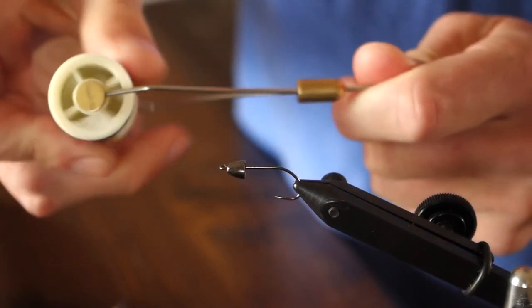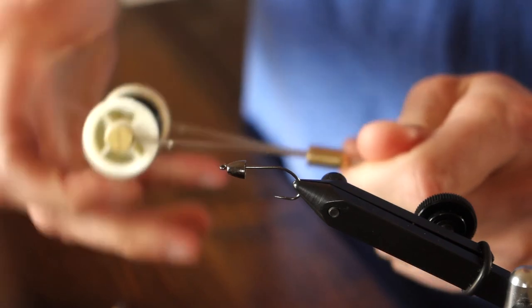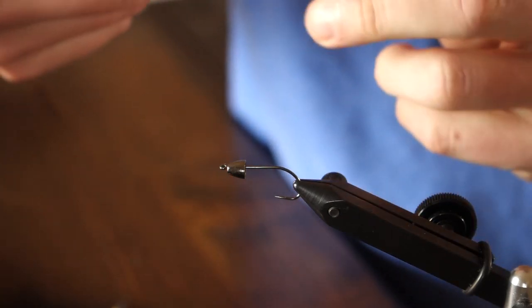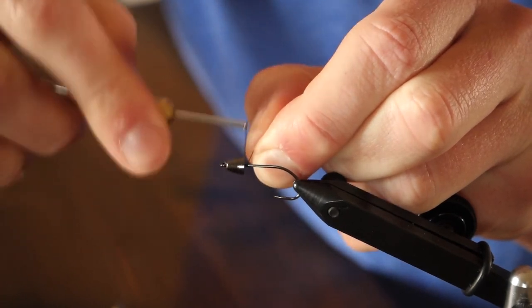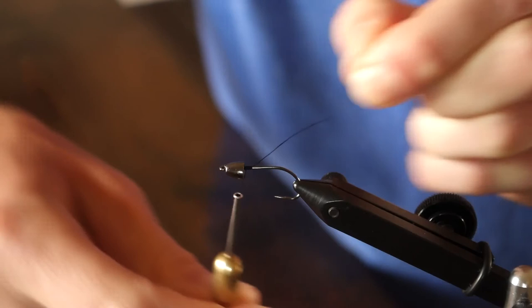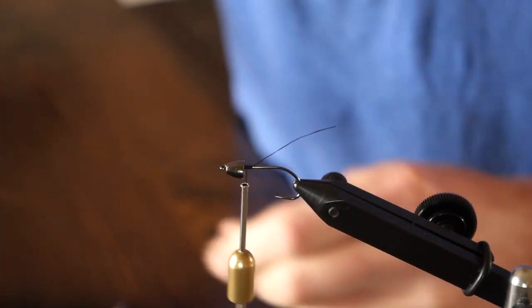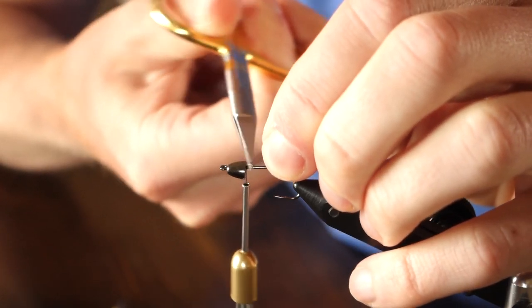So we're tying this on a size 6 B10S stinger hook. It's one of my favorite big streamer hooks, super sharp. I've got a medium sized tungsten cone head on it. I begin my wraps just behind the cone head, and I'm going to make thread wraps all the way back to the bend of the hook.